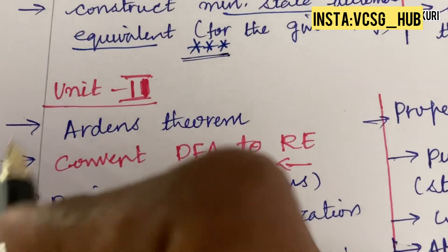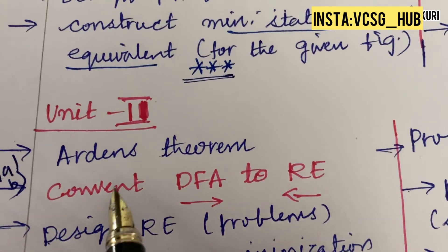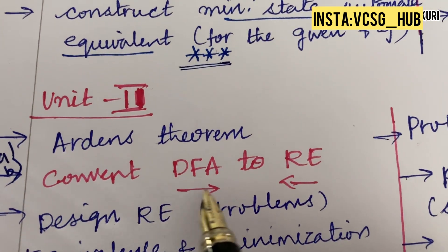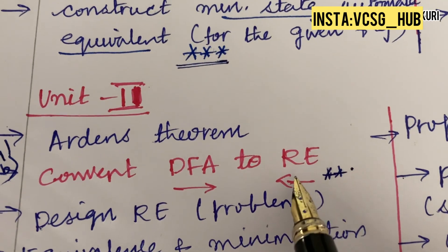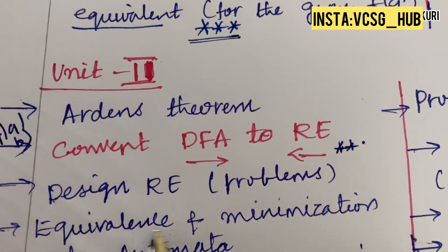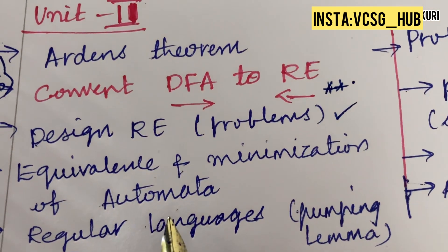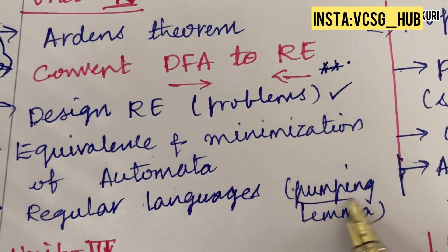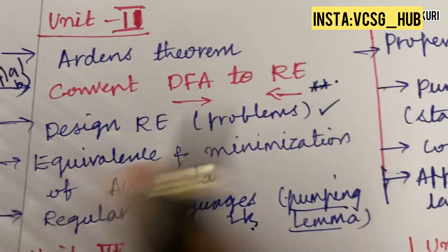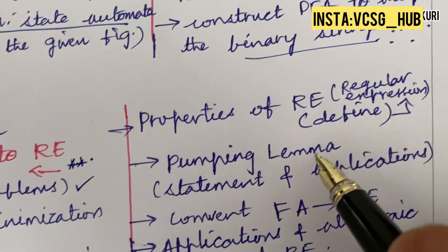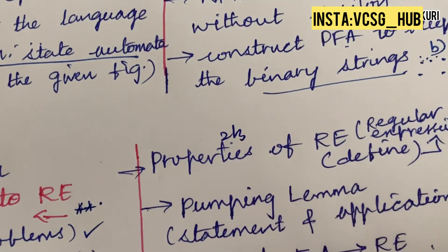Unit 2 covers Q4A as well as Q4B. Arden's theorem and Convert DFA to Regular Expression is said to be a topmost question, and vice versa — designing a regular expression related to it as a problem — as well as equivalence and minimization of automata. Regular languages and the pumping lemma may be a 2 or 3 mark question. Properties of regular expressions and defining the term 'regular expression' may also be a 2 or 3 mark question.